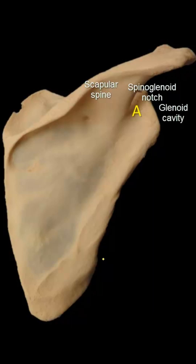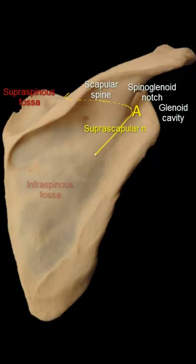The nerve is the suprascapular nerve. As it arises in the supraspinous fossa, it supplies the supraspinatus muscle, then curves through the spinoglenoid notch to reach the infraspinous fossa where it supplies the infraspinatus muscle.